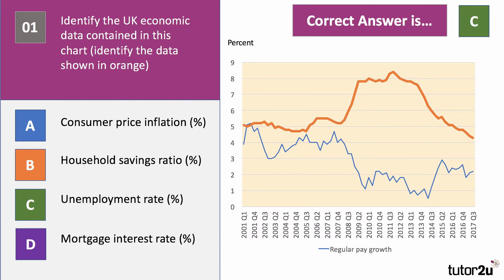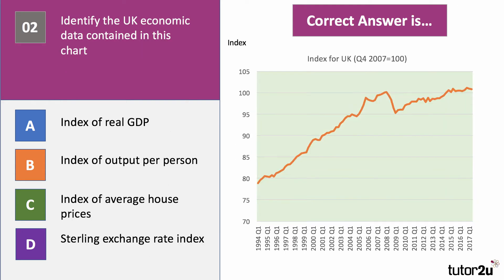Chart one shows the unemployment rate in the UK. Notice for the exam how unemployment has fallen from just over 8% in 2011, now heading towards 4% of the labour force — a substantial fall over the last six years; the unemployment rate has indeed halved. Yet the growth of pay is relatively stable at around 2%. The key question is how much further can unemployment fall before wage inflation starts to pick up.